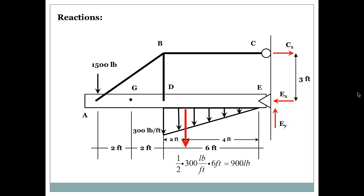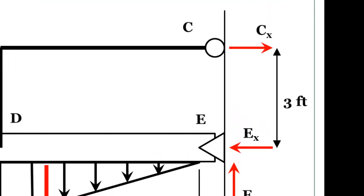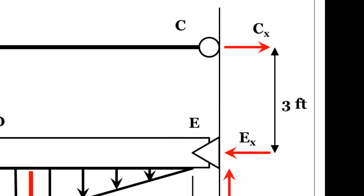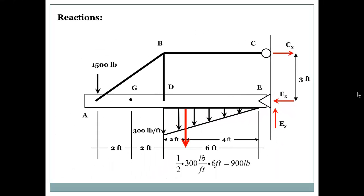And the way I chose the direction of the reactions is just by looking at how would the joint move if the loading is applied. So if I apply the 1500 pounds and the 300 pound per foot distributed load, I would expect joint C to resist the loading to the right, and I would expect joint E to resist the loading to the left and upward. Anyways, if one of these reactions turns out to be negative, that means my assumption is wrong.